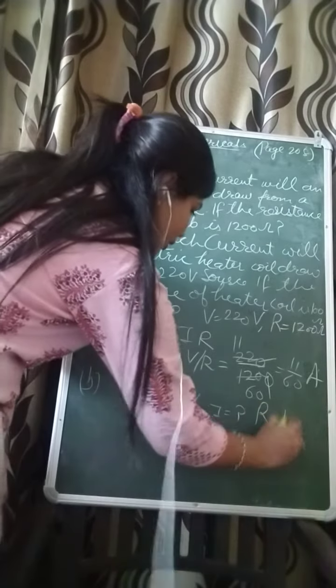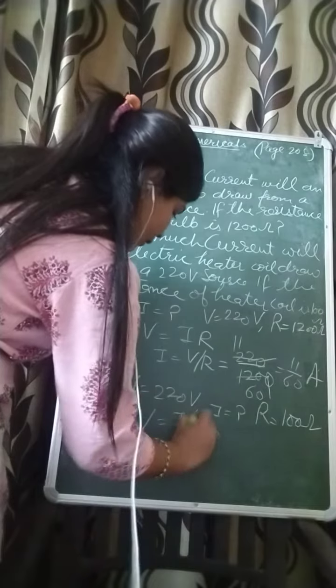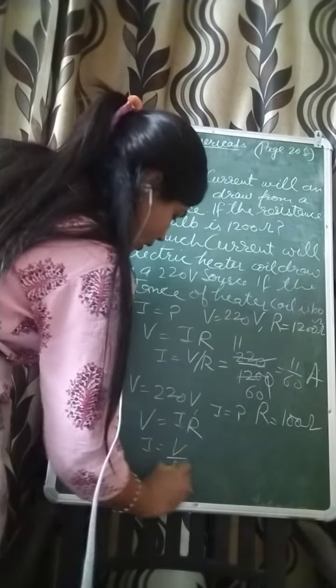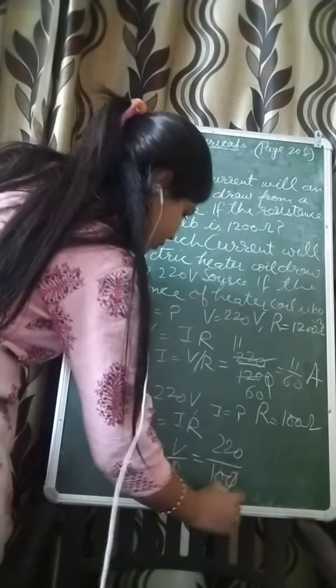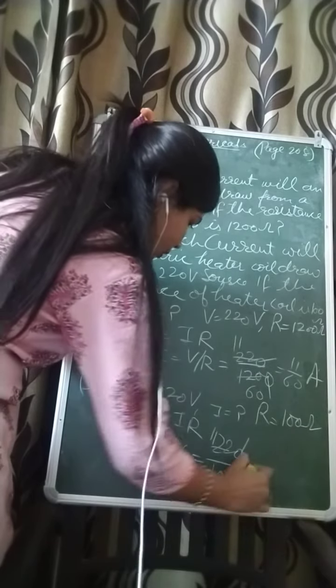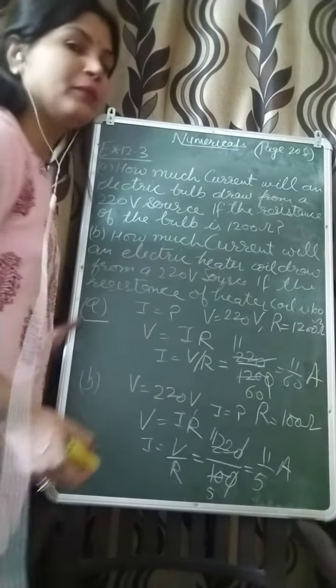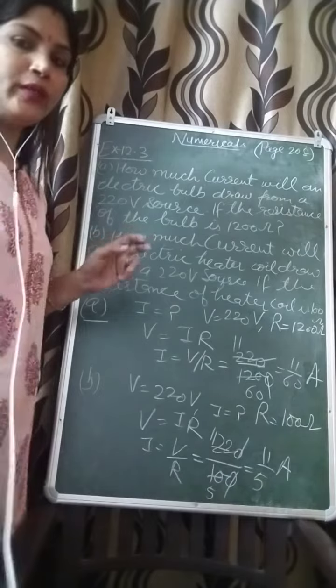So R is given 100 ohm, then V is equal to IR according to Ohm's law. Then I is equal to V upon R. V is equal to 220 and R is given 100. 0 is 0 cancel, 22 by 2 is 11, so 11.5 ampere. You can convert this to decimal. So this is example 12.3.